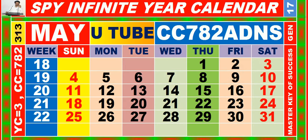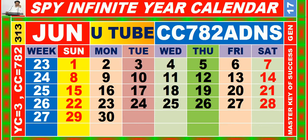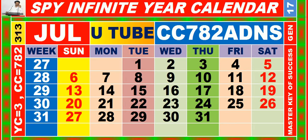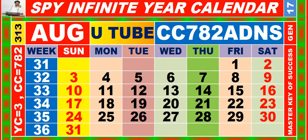Calendar for the month of May, having calendar code equal to 7, 8, 2. Calendar for the month of June, having calendar code equal to 7, 8, 2. Calendar for the month of July, having calendar code equal to 7, 8, 2. Calendar for the month of August, having calendar code equal to 7, 8, 2.